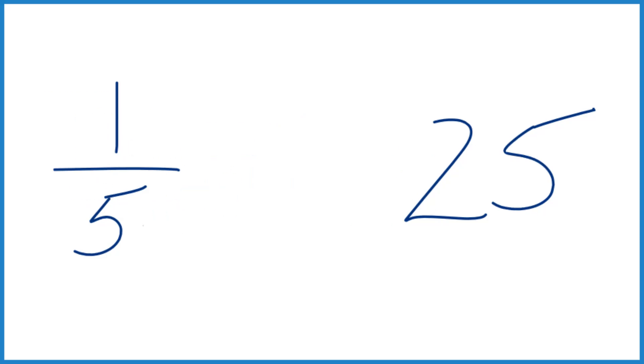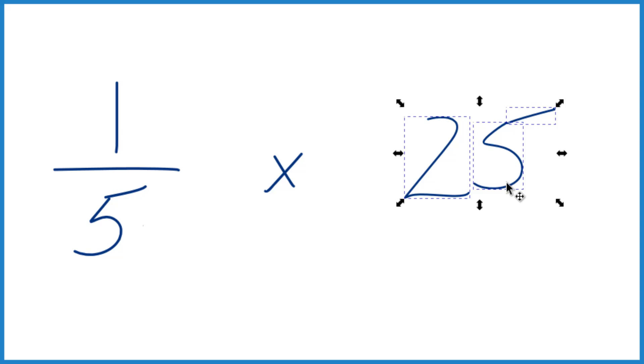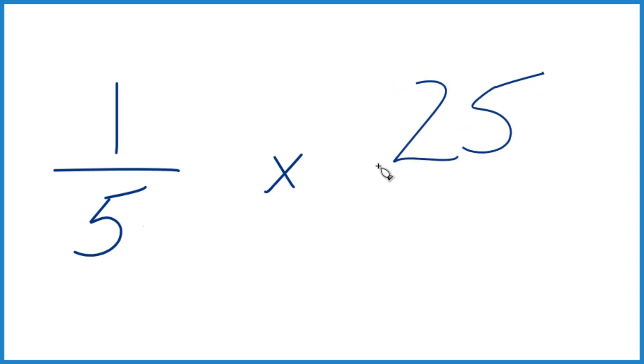The first thing we do, instead of 'of', we're going to do multiplication, same thing. And instead of 25 like this, I'm going to make it a little bit smaller and move it up and call it 25 over 1.